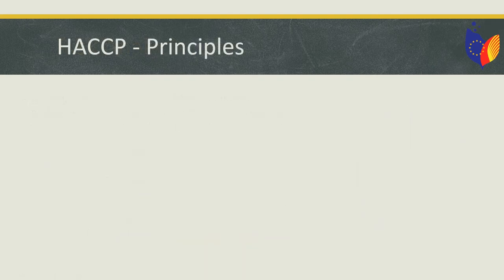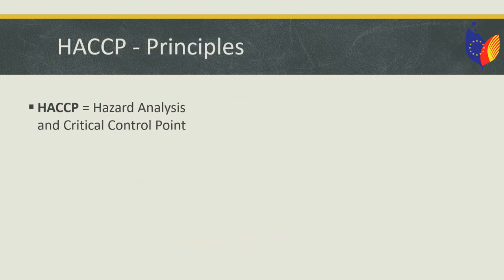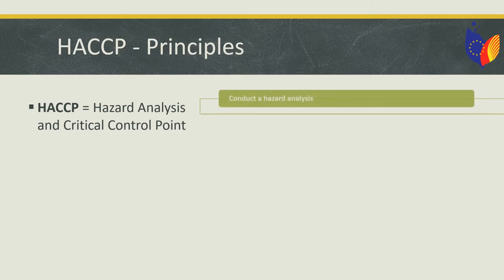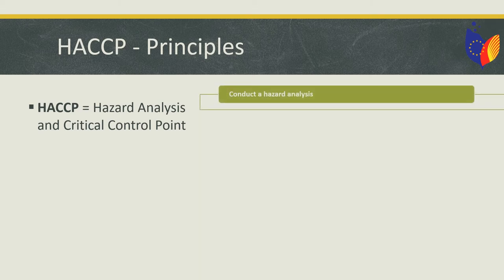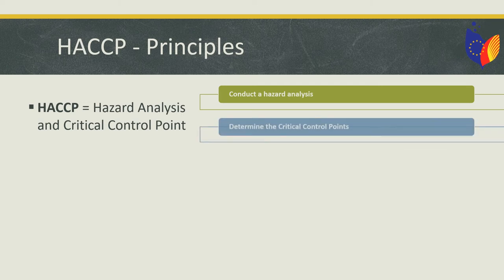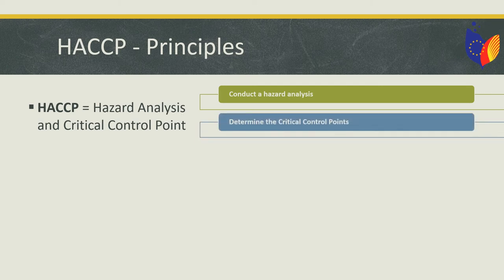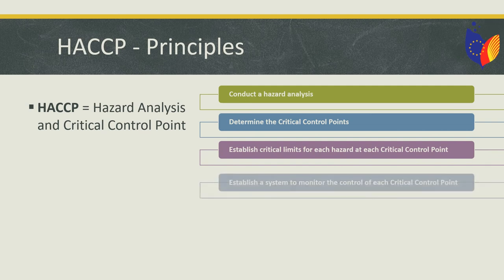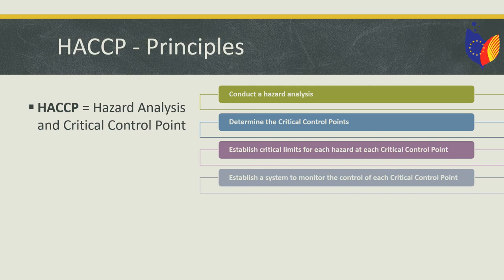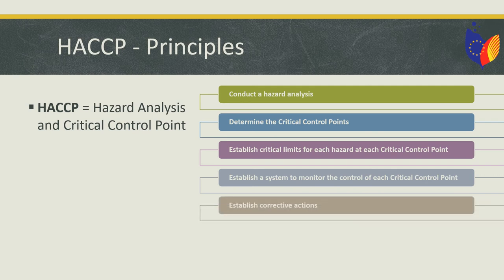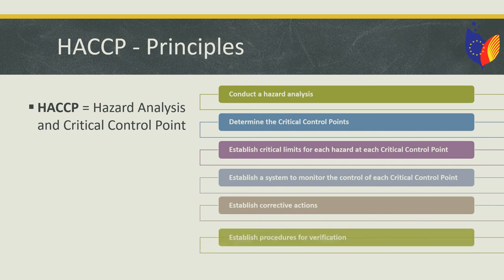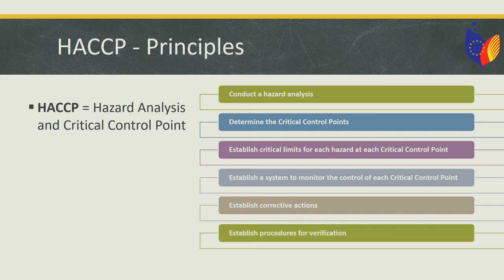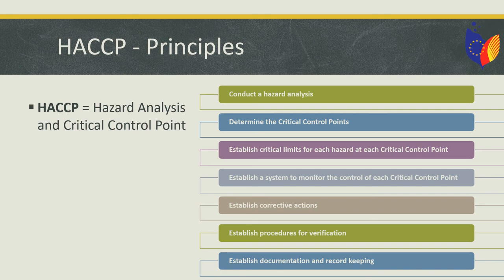But what does HACCP mean? HACCP means Hazard Analysis and Critical Control Point. It is a proactive system which identifies, evaluates and controls hazards. HACCP consists of seven principles: 1. Conduct a hazard analysis. 2. Determine the critical control points. 3. Establish critical limits for each hazard at each critical control point. 4. Establish a system to monitor the control of each critical control point. 5. Establish corrective actions. 6. Establish procedures for verification. And 7. Establish documentation and record keeping.